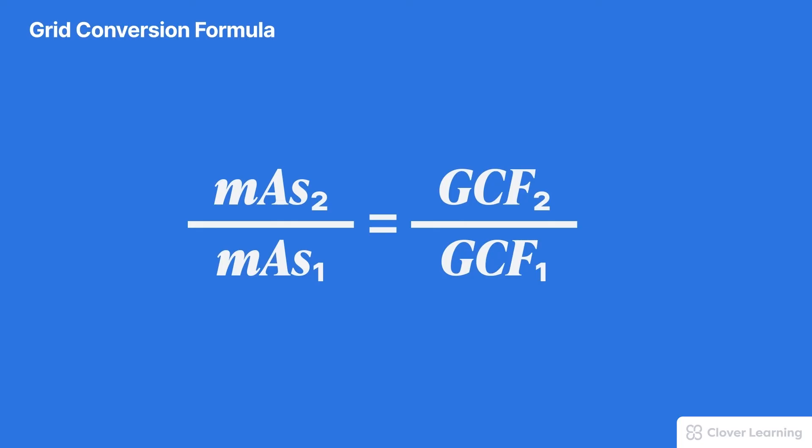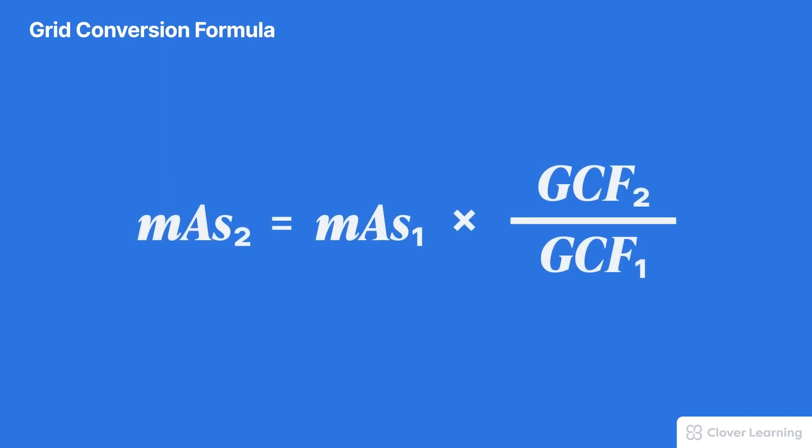The base formula looks like this: mAs2 over mAs1 is equal to grid conversion factor 2 over grid conversion factor 1. mAs2 is just the new mAs, that's the number that we have to calculate. mAs1 is the original mAs, that's the mAs we would use based on the original grid ratio. A very useful form of this formula looks like this: mAs2 equals mAs1 multiplied by grid conversion factor 2 divided by grid conversion factor 1. It's actually the same formula, but in this form we can solve directly for the new mAs without any extra steps or cross multiplication.